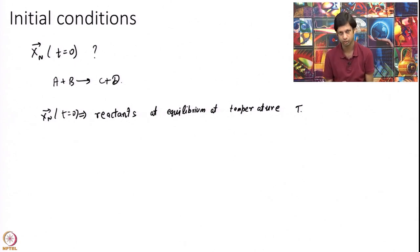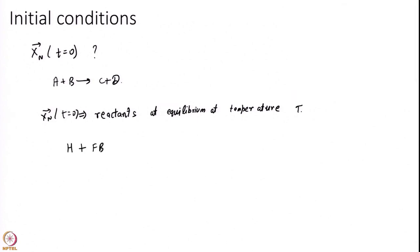I have to first tell you where does this Xn at T equal to 0 look like, and that really depends on what problem you are trying to study. So let us say I am trying to think of some reaction A plus B going to C plus D. What should be my initial conditions? My initial conditions then should correspond to reactants at equilibrium at temperature. We have some molecule, some collisions happening, some notion of temperature there, and I am thinking that initially I should be reactant, I should look like A plus B.